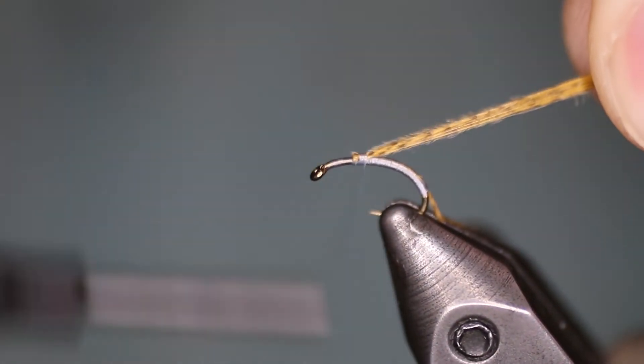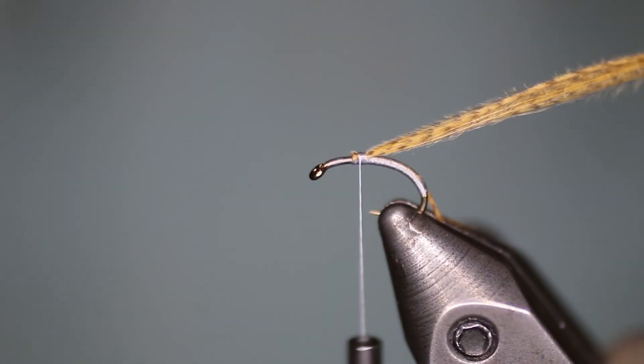Fold these mallard flank fibers back just so they're in position to become a wing case.